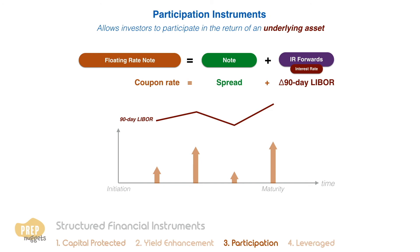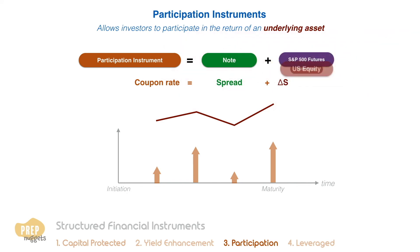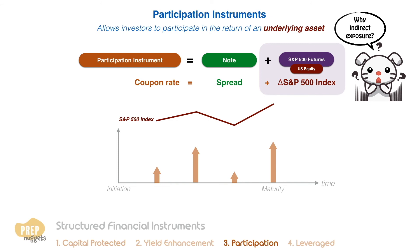Besides mitigating interest rate risks, participation instruments are also designed to give investors indirect exposure to a particular index or asset price. For example, a participation instrument can be structured to give investors an indirect exposure to U.S. equity. Some fund managers may be restricted to invest only in debt securities, so having such instruments, which are considered debt securities, can give them the exposure that they desire from equity.